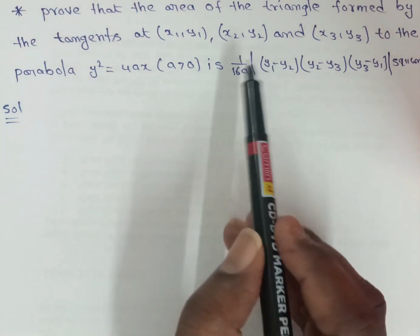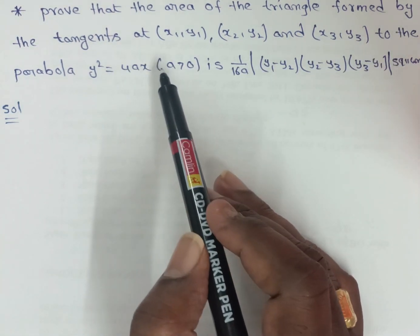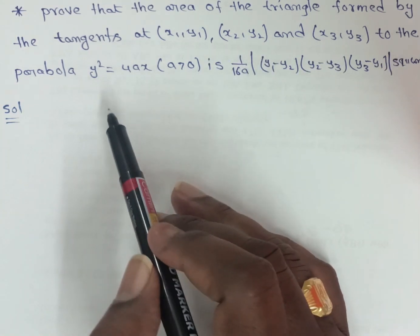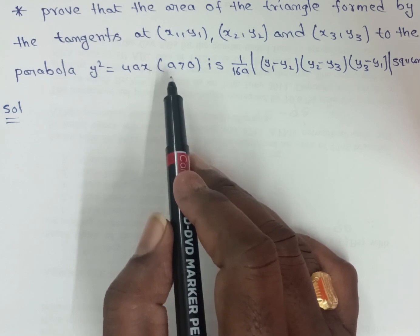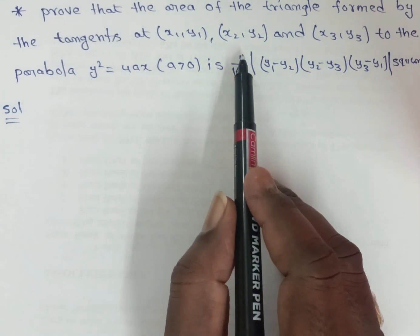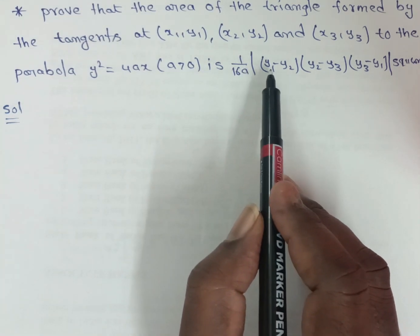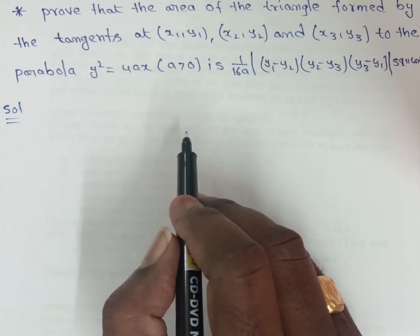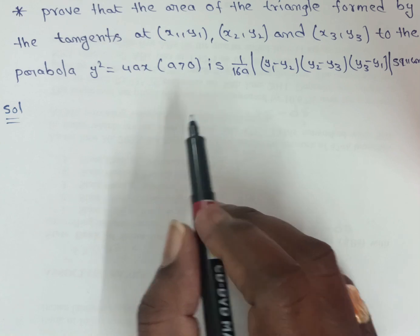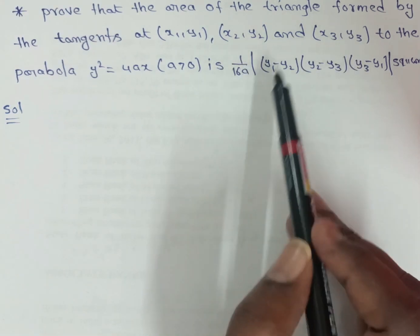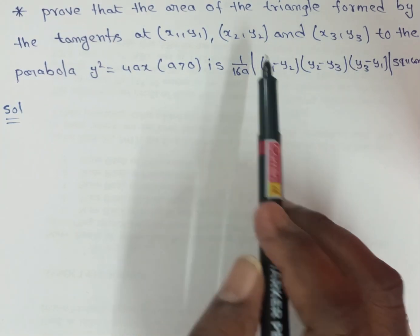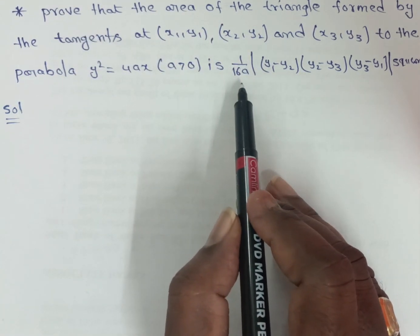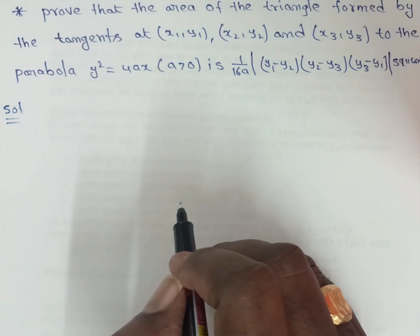Prove that the area of the triangle formed by the tangents at points (x1, y1), (x2, y2), and (x3, y3) to the parabola y² = 4ax (a > 0) is (1/16a) multiplied by the modulus of (y1 − y2)(y2 − y3)(y3 − y1) square units. In the previous class we already established the area using vertices as 1/8a, and now we find the area using tangents as 1/16a.